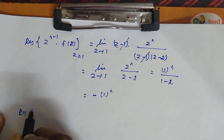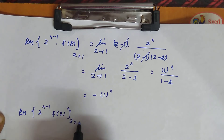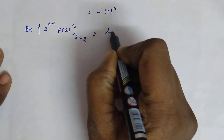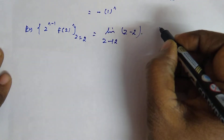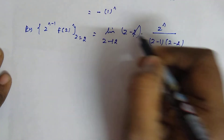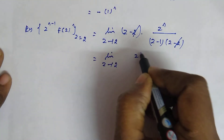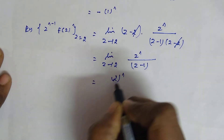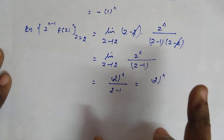Now the residue at z = 2. The residue is: lim(z→2) (z−2) · z^n / [(z−1)(z−2)]. Cancelling (z−2), we get lim(z→2) z^n / (z−1) = 2^n / (2−1) = 2^n. So the second residue is 2^n.